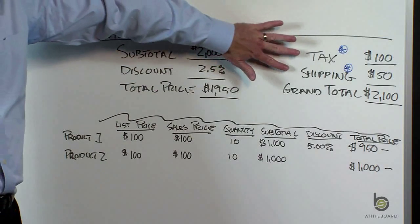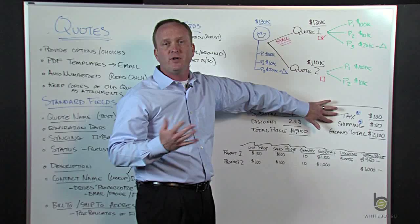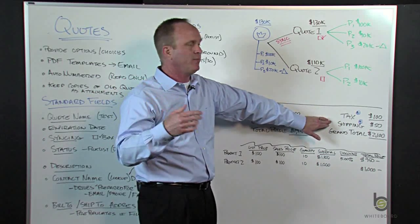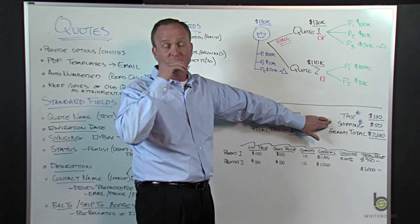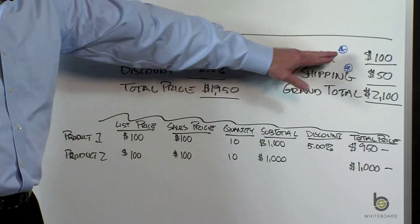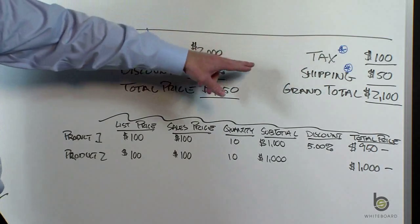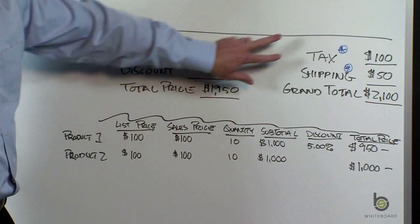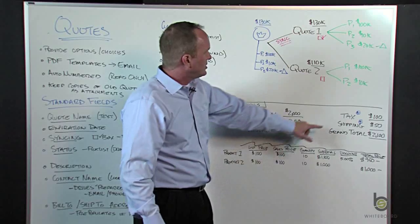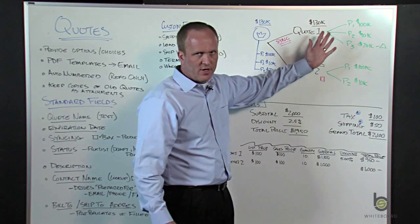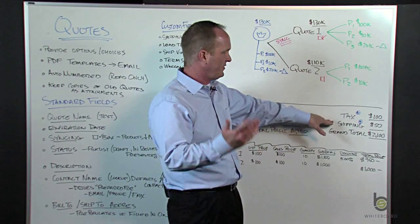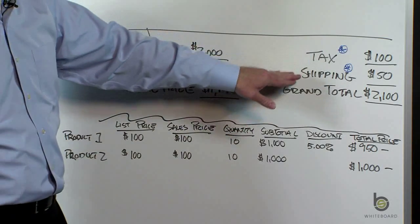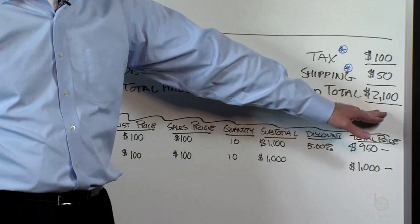There are two extra dollar fields on a quote — tax and shipping. They're freeform; they don't auto-calculate. So tax isn't computing somewhere automatically, nor is shipping — you could do that with custom code. I put a blue asterisk next to those two fields because you literally just hand-key them in. The other fields are calculated, but these are hand-entered. So I threw in tax for $100 and shipping for $50. Our grand total is total price plus tax plus shipping — that's the grand total on your quote.